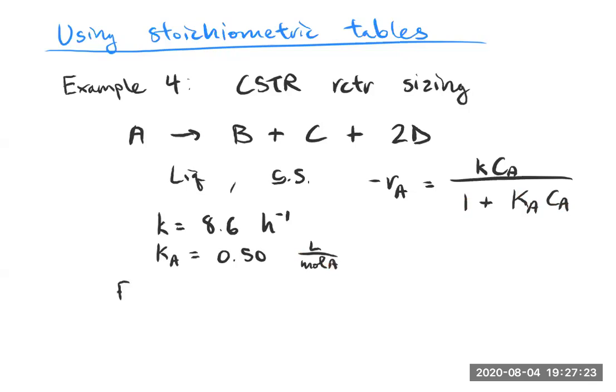More about our setup. So we're going to have a feed that's a mixture of A and an inert solvent I. CA naught is equal to 0.75 moles per liter. And again, I think some of these examples with numbers are useful just for thinking about units and actually pulling out your calculators and so forth. So that's why we're taking the time to write those out.